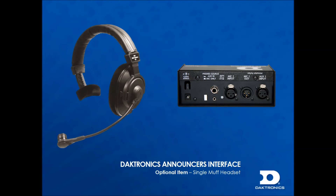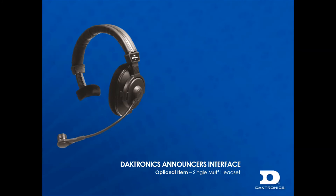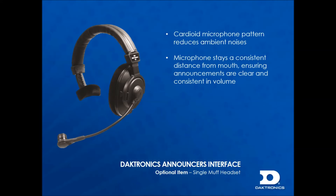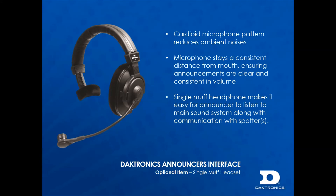An option that can be used in lieu of the supplied gooseneck vocal microphone and headphones is a single muff headset. This plugs directly into the XLR microphone input and the quarter inch headphone input on the rear of the interface. This option provides many added benefits such as greater ambient noise reduction, keeps the microphone at a consistent distance from the announcer's mouth, and it makes it easier for the announcer to listen to the sound coming out of the main sound system while keeping an ear free to listen to what's happening around them.